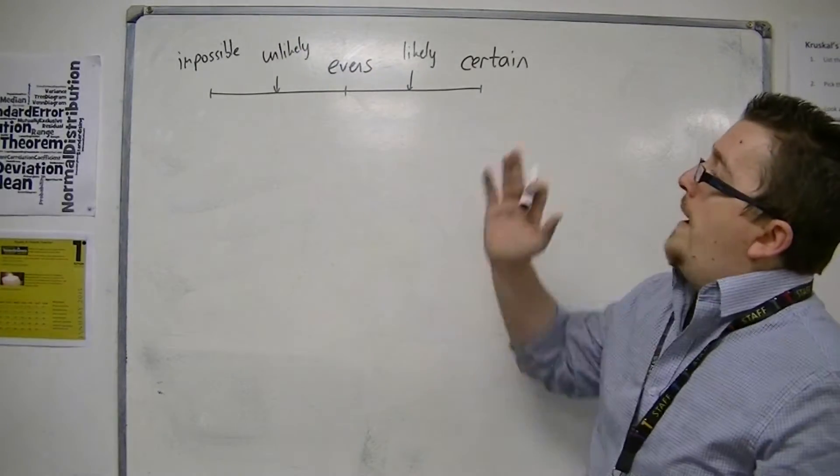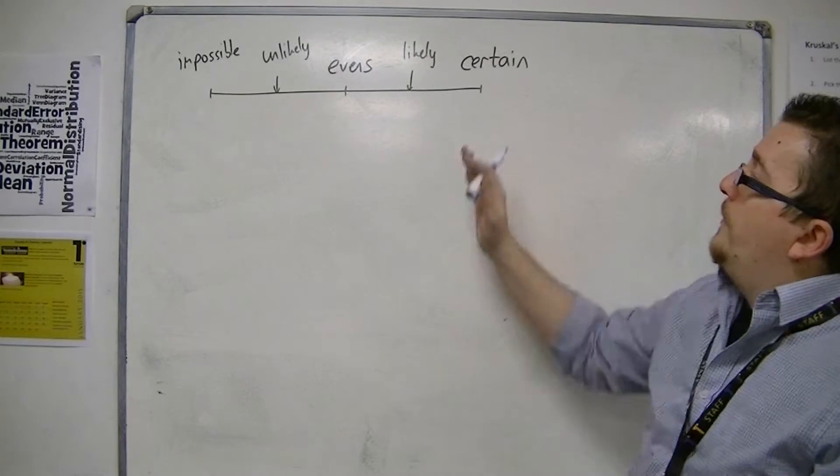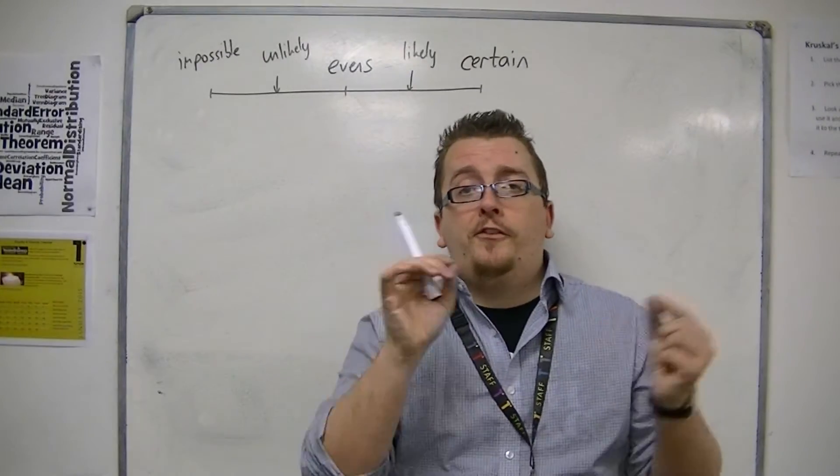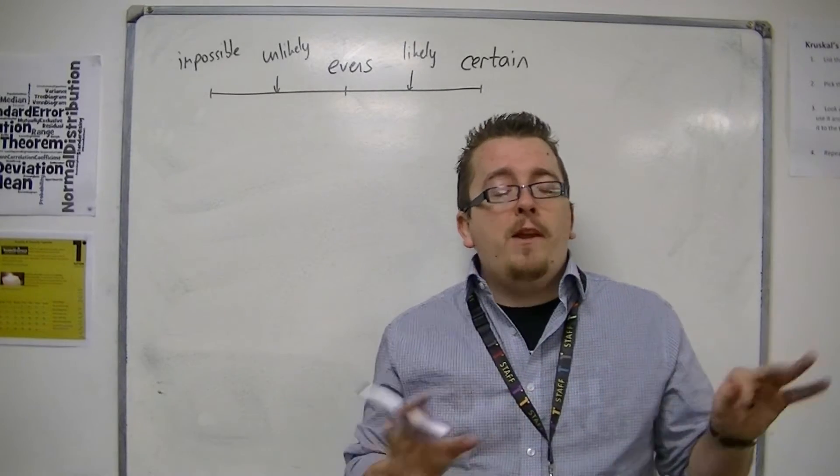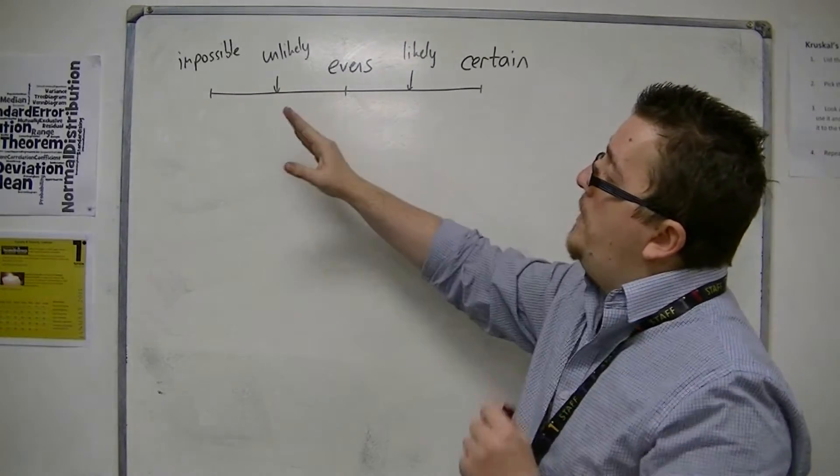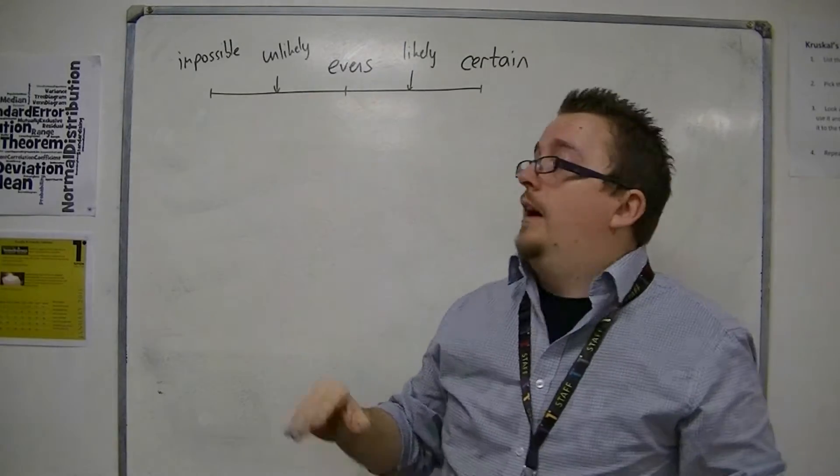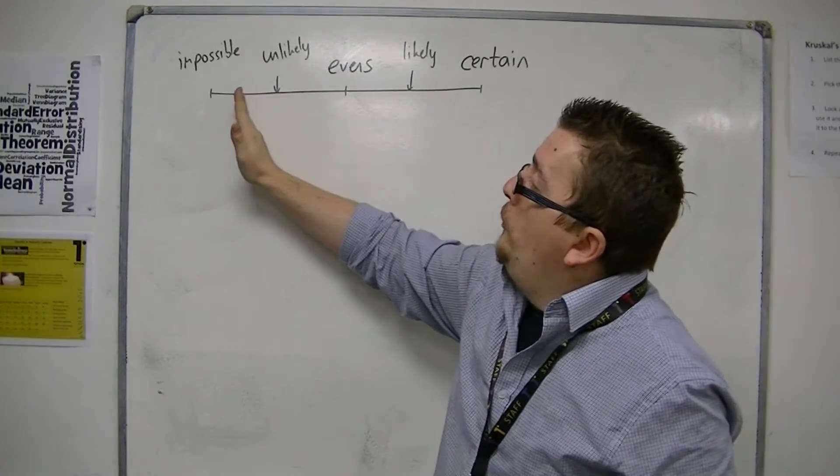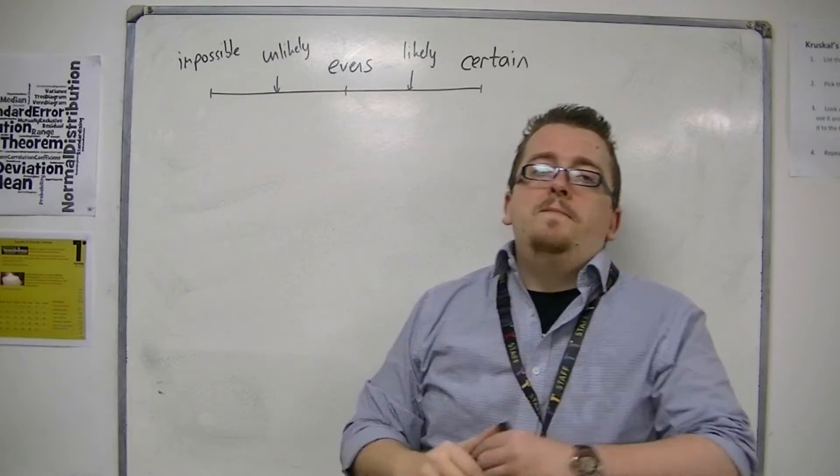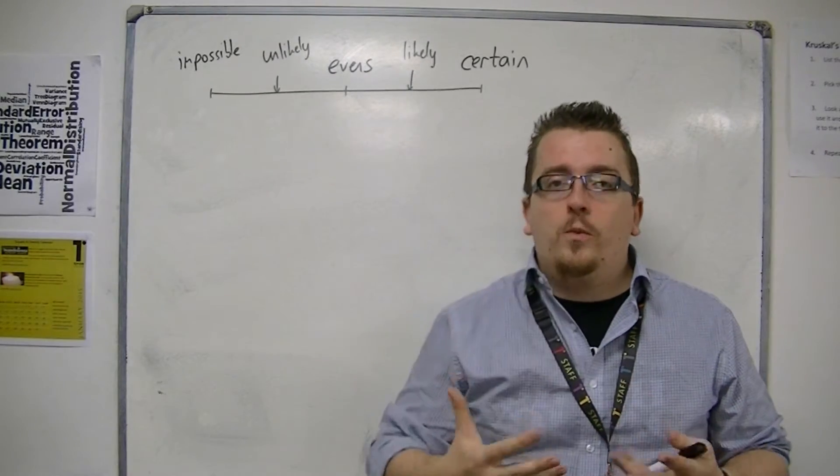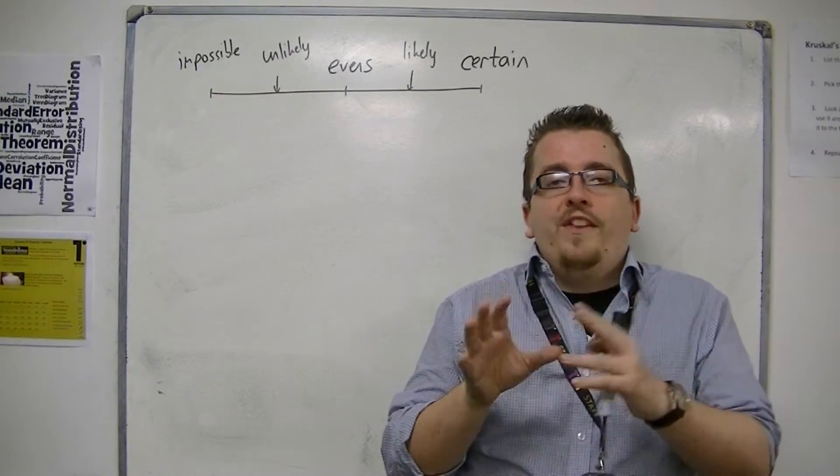But, although impossible, evens, and certain are fixed values, unlikely and likely, they're a bit wishy-washy. They're not strictly in the middle of impossible and evens. I mean, if I go closer to the impossible, then it gets less and less likely. And that's not particularly good for mathematicians. We want things to be exact.